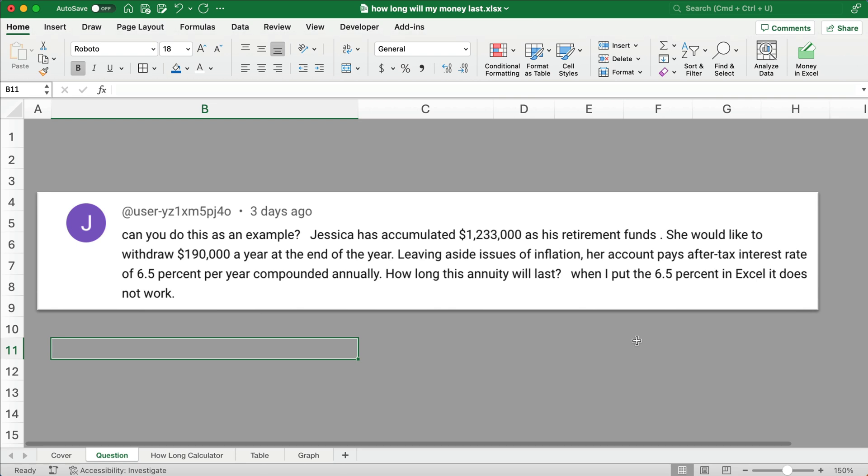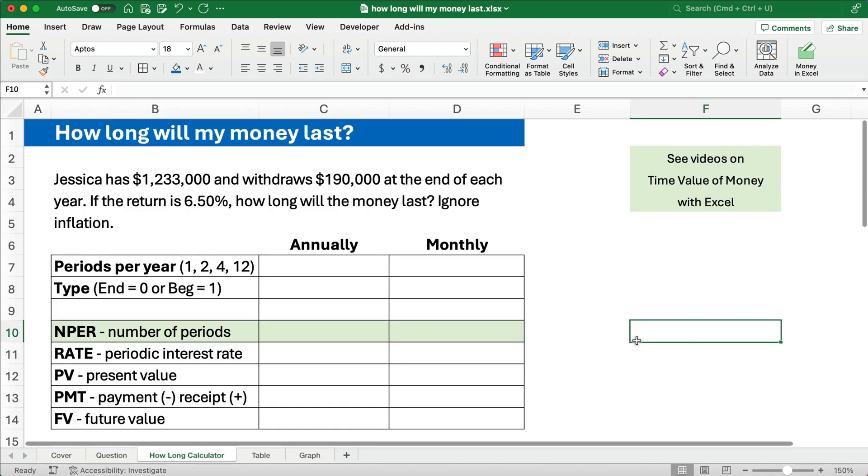So Jessica has accumulated $1,233,000 in the retirement funds. We're going to withdraw $190,000 per year, not counting inflation. Let's assume an interest rate of 6.5%. How long will this annuity last? When I put the 6.5% in Excel it does not work. So let me show you how this works.